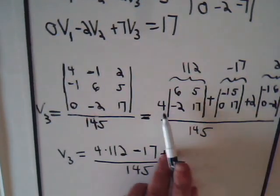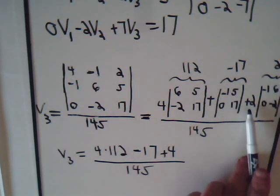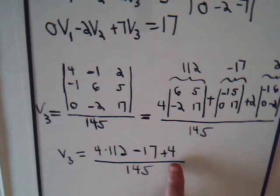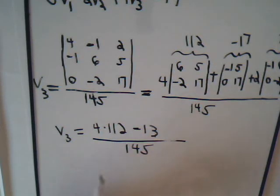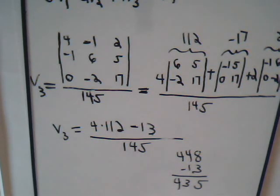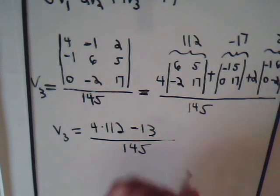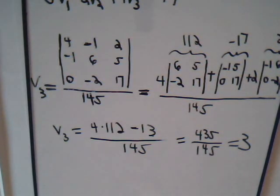Bring this into better focus, 4 times 112 minus 17, that's what this is, 17 times minus 1, and that's not a minus 1 there, that's a plus 1. And negative 1 times negative 2 is plus 2 times 2 is plus 4, so this is minus 13. So we have 8, 448 minus 13. That's 435. 435 divided by 145, that's plus 3 volts.